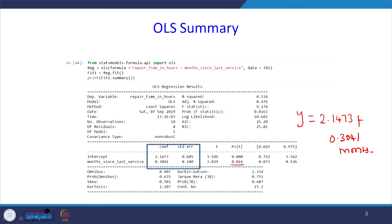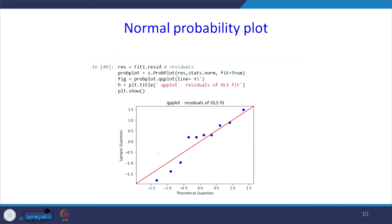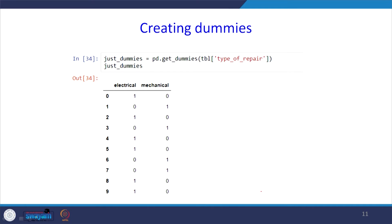Now we will look at residual plots. Our regression model is y = 2.15 + 0.304 x1. When you look at the normal probability plot, all points should align with the red line, but many points are away from it. So the error is not following a normal distribution, indicating the residual plot is not appropriate. We will first create a dummy variable for the categorical data.